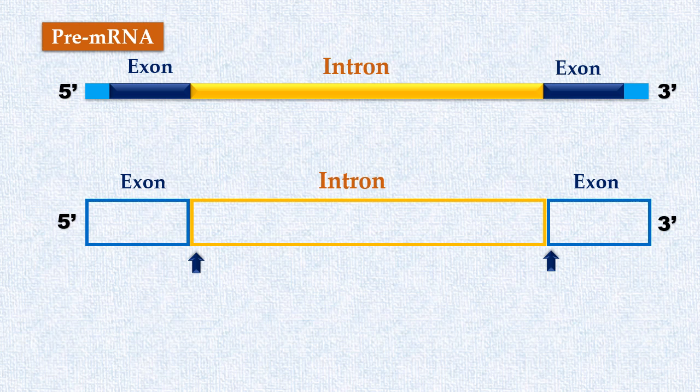In case of mammals, the 5' end of each intron almost always has GU nucleotides, and the 3' end of each intron has AG nucleotides. These sites on each intron are known as 5' splice site and 3' splice site.